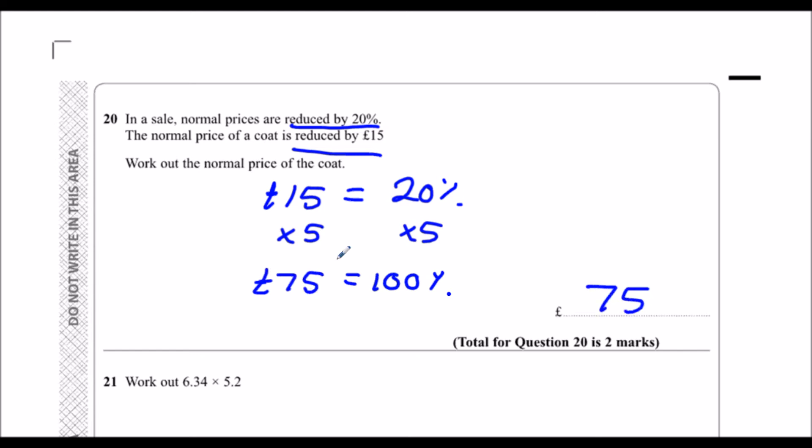So £75. And again, if you want to check this, you could try and work out 20% of £75 and it should be £15, which it is.